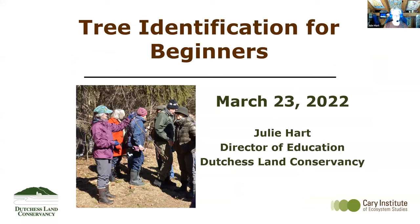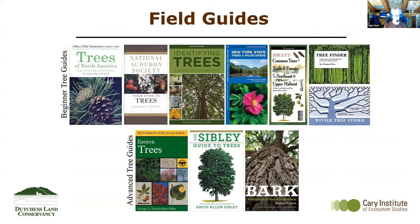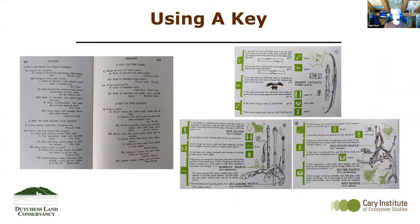Thank you, Brian, and thank you everyone for coming out tonight. My name is Julie Hart — I'm an ecologist and an educator here at the Dutchess Land Conservancy. I'm going to give you a quick walkthrough of the use of a dichotomous key to identify trees, and then I'll cover some of the more common deciduous and alternate branching trees in our area. Brian mentioned field guides, and many of these are set up in different ways — some by shape of leaves or color in the fall. A dichotomous key is a specific type of field guide that allows you to go through a step-by-step process to figure out what a tree is.